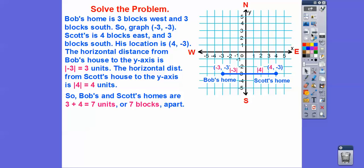And then Scott's home is the absolute value of 4, which is just 4 right there. So their distance apart is 3 plus 4, which is 7 units or 7 squares, or in this case, 7 blocks apart.